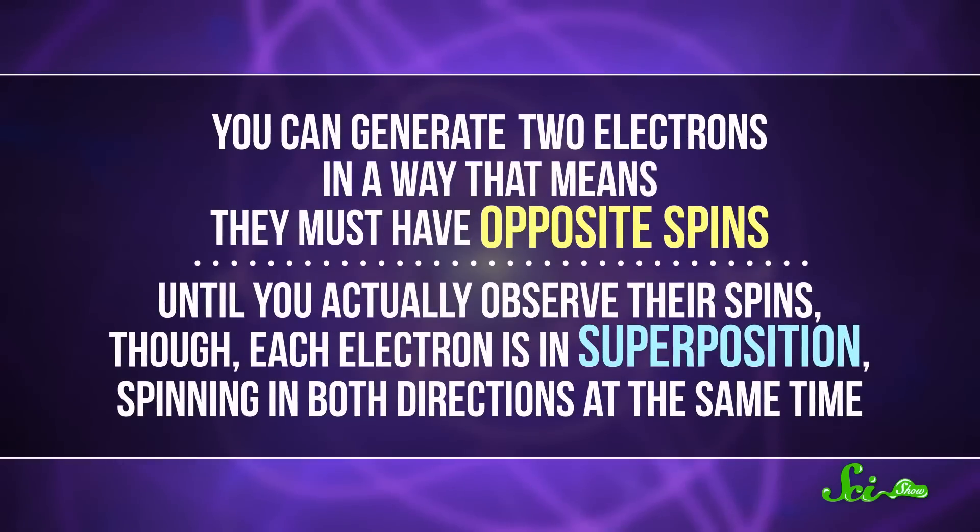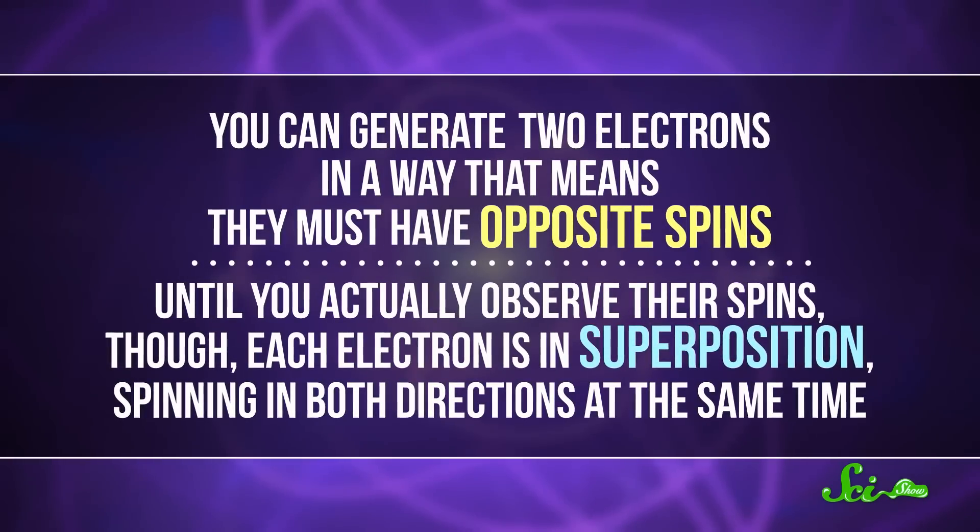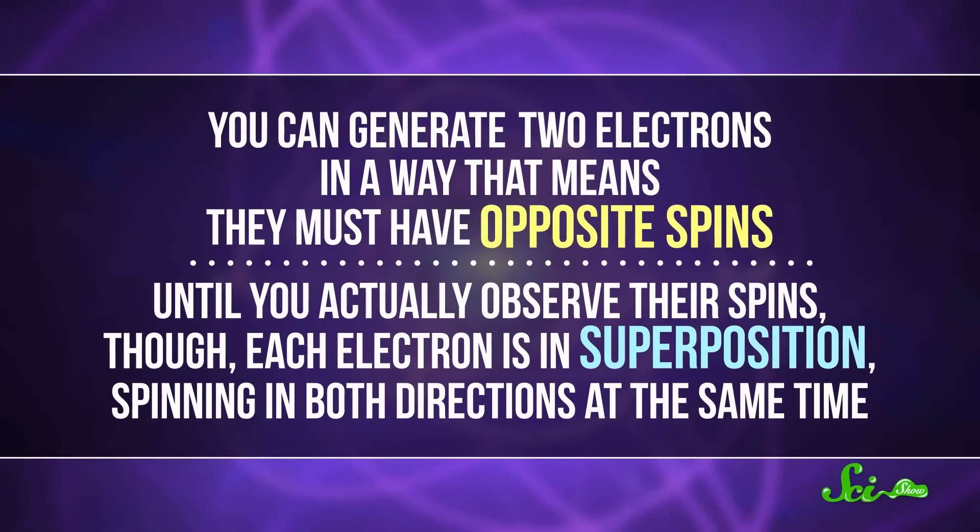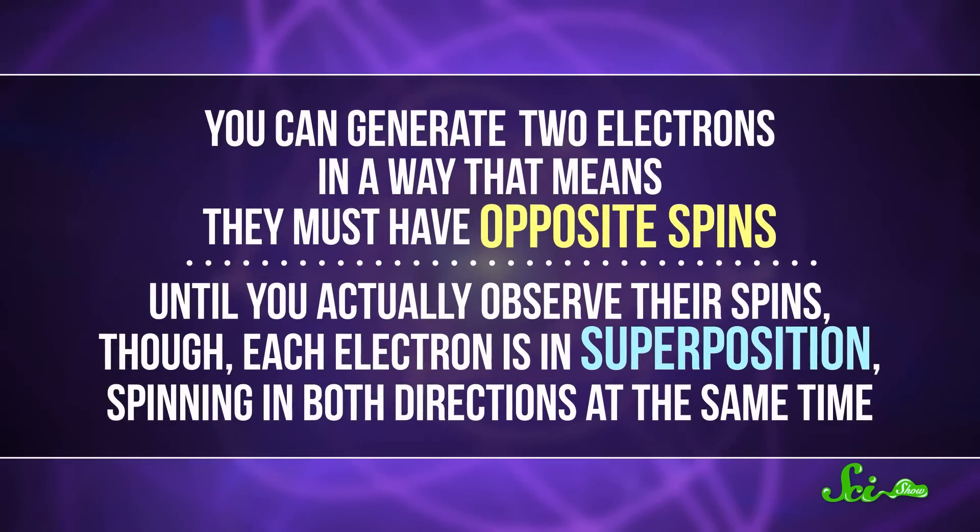Now, the Copenhagen interpretation actually does violate locality in certain situations. For example, you can generate two electrons in a way that means they must have opposite spins. And until you actually observe their spins, though, each electron is in superposition, spinning in both directions at the same time.